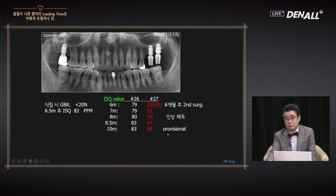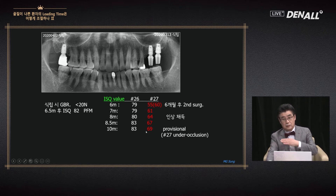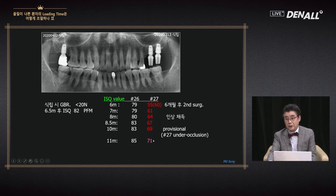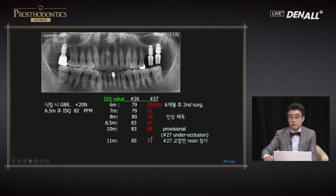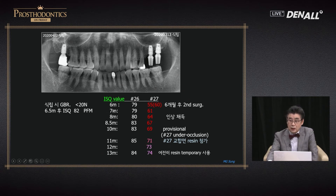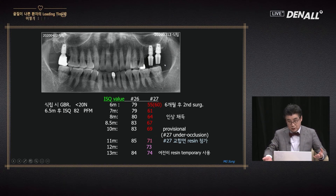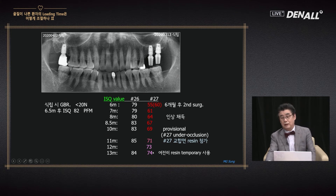We put in a provisional. With that, one implant at ISQ 83 had occlusion, but the other at 69 had under-occlusion. We created a provisional and after another month it went up again — meaning with the provisional it bears some load but is not failing, and can withstand a bit more. So I raised the occlusion slightly — about to touch each other but not in full contact — and waited again. After placing the implant it has been one year and one month, still not going to final restoration, still using provisional. The patient has no inconvenience because there is no problem eating in daily life — he accepts it.